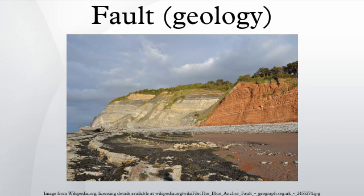The fault plane is the plane that represents the fracture surface of a fault. Flat segments of thrust fault planes are known as flats, and inclined sections of the thrust are known as ramps. Typically, thrust faults move within formations by forming flats and climb up section with ramps. Fault-bend folds are formed by movement of the hanging wall over a non-planar fault surface and are found associated with both extensional and thrust faults.